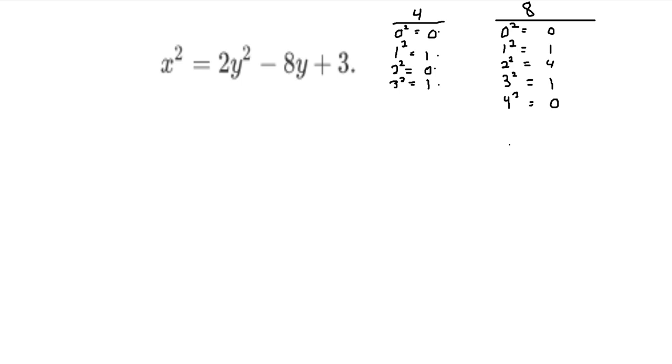The rest of the numbers, 5, 6, and 7 will just be these numbers, but basically backwards, because 5 is equal to negative 3, and if you square both sides, you get 5 squared is equal to 3 squared. So we would get 1, 4, 1.